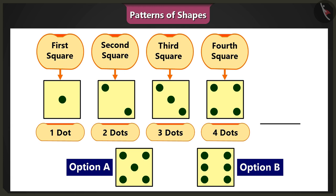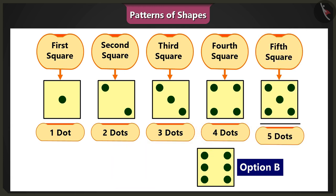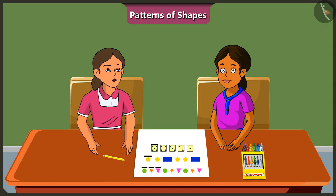This means that the dots in these squares are in ascending order. So, according to this pattern, the fifth square will have five dots in it, right? Yes.